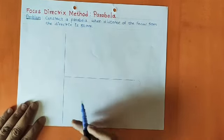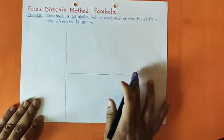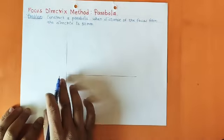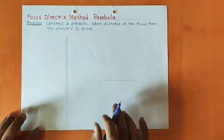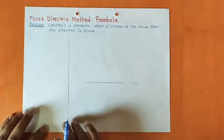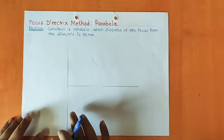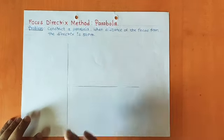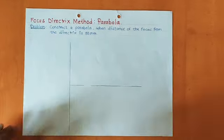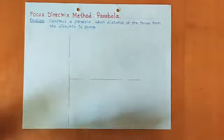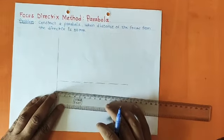First, as you can see, I have drawn the fixed line that is the directrix. And I have drawn one line which is perpendicular to this directrix — that is called the axis. Before that, we made one introductory video on conics. If you have not watched that video, please go and watch it, and then you will understand this method and all parts of the conics section.